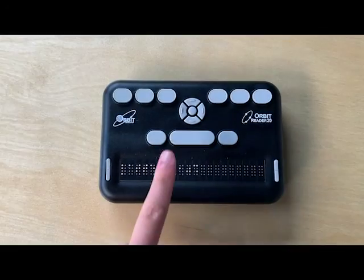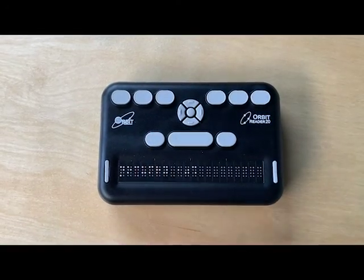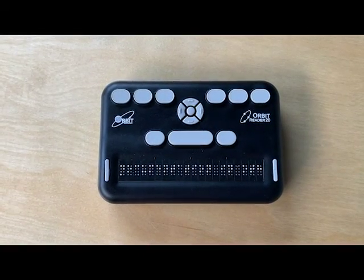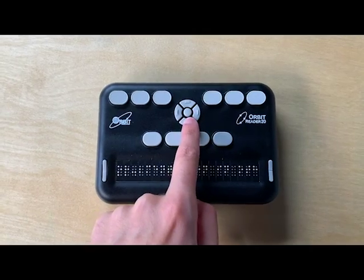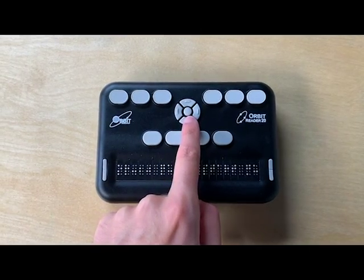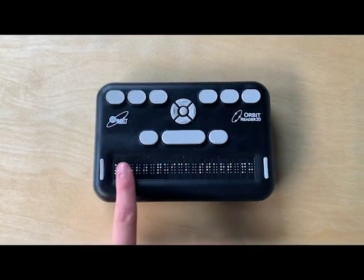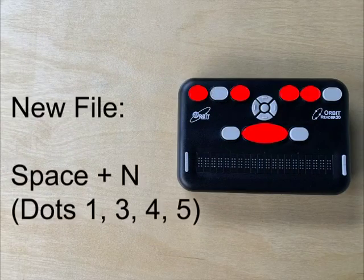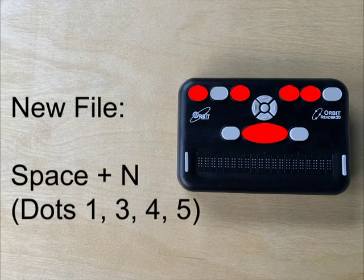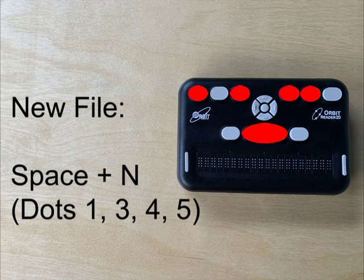To open the file manager, press .7. New files can be created from the file manager and from the reader. To make a new file, press the chord which is dots 1, 3, 4, and 5.